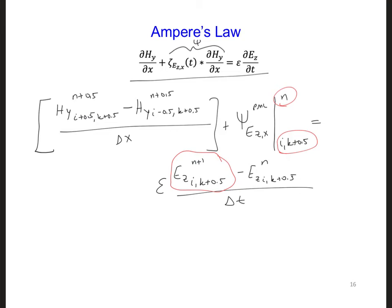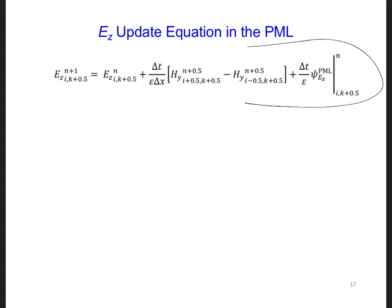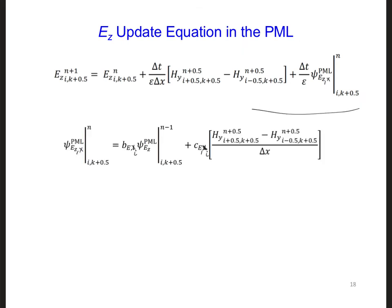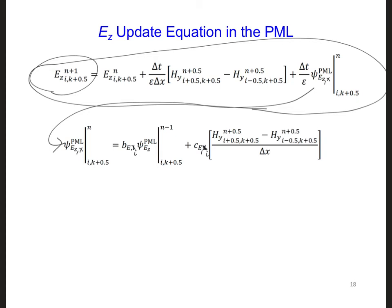So now we can solve for the future field component. This is what we end up with for solving for the future value of E_z within the PML. Here's our future value of E_z equation again, and here I've written out what psi is equal to. Notice that the b and the c coefficients each have an index i. This is because they depend on the PML conductivity, which will change with depth into the PML. Here's sigma, here's our PEC, here's the PML, and here's our wave propagation towards the PML. It's changing with depth into the PML just as it did for our one-dimensional FDTD code.